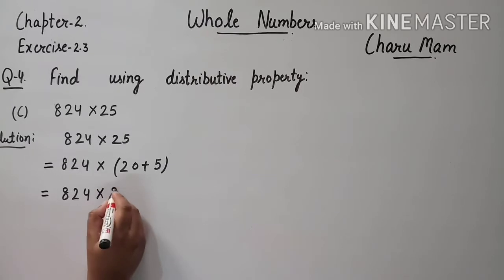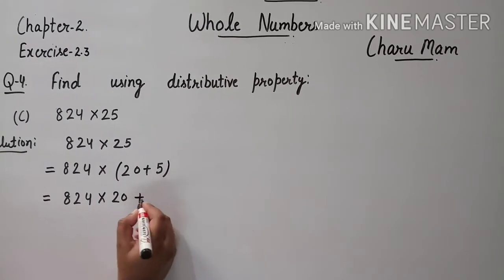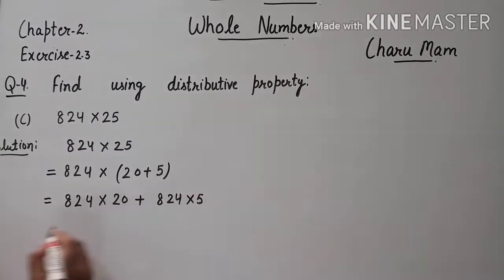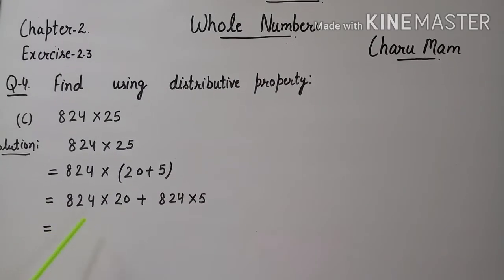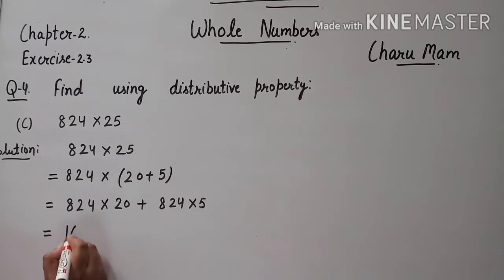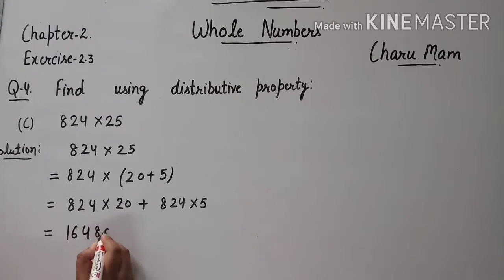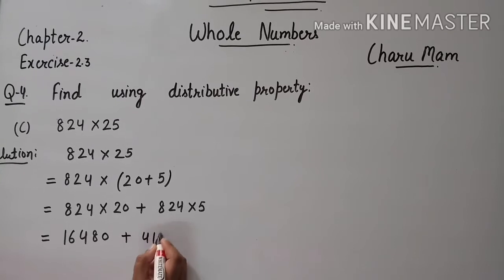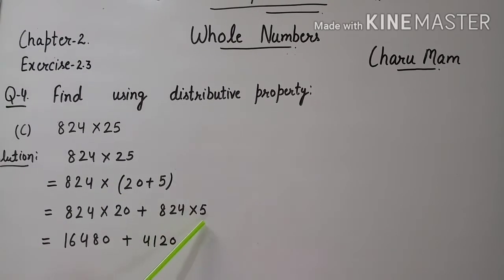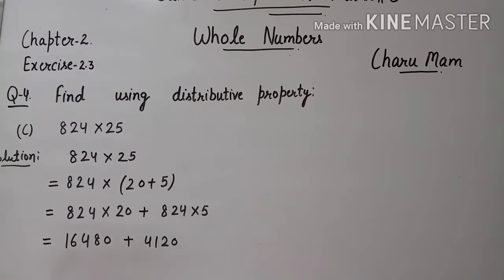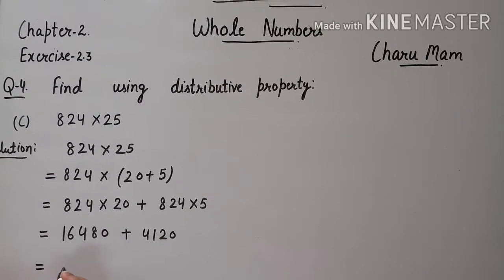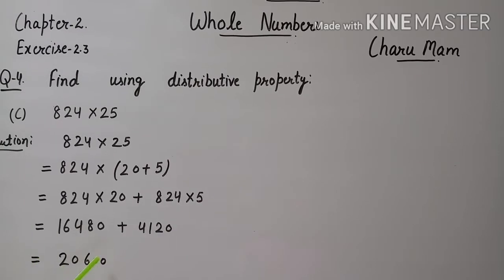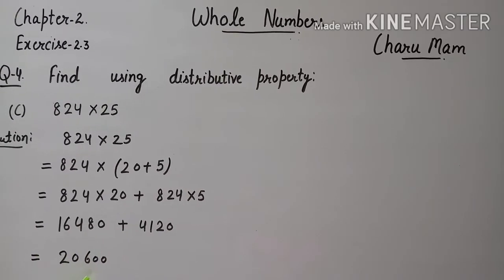824 को multiply करेंगे 20 से, then plus, फिर 824 को हम 5 से multiply करेंगे. इन दोनों को multiply करेंगे तो क्या आएगा? 16,480. इन दोनों को multiply करेंगे तो क्या आएगा? 4,120. अब हम इन दोनों को add करेंगे. तो add करके क्या आया? 20,600.